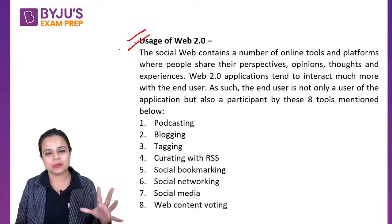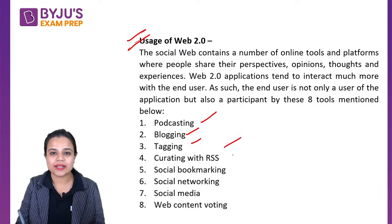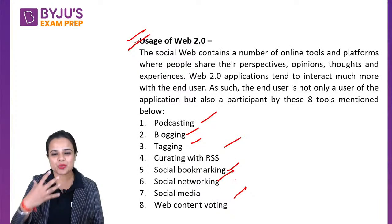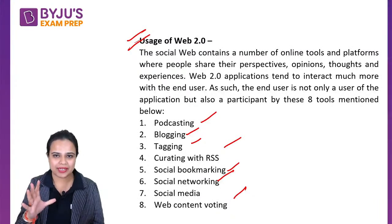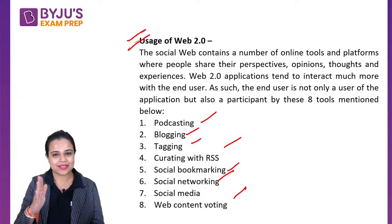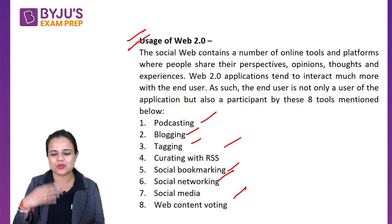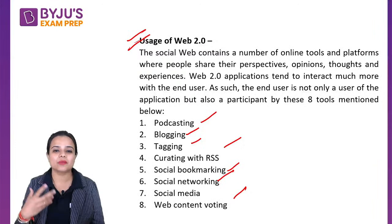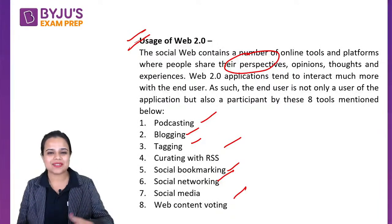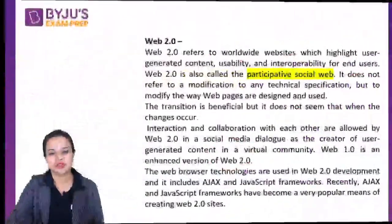Web 2.0 also has eight key elements that differentiate it from Web 1.0: tagging, blogging, podcasting, curating, social networking, social media, web content voting, and more. All social media started during this time — tagging on Facebook and Instagram, social networking, bookmarking. These things became very popular from 2004 to 2016. People started sharing opinions, thoughts, and experiences — that was Web 2.0.